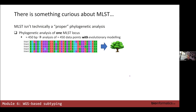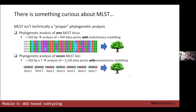In the olden days before whole genome sequence data, you might perform phylogenetic analysis by amplifying a particular gene and then performing phylogenetic analysis of that sequence data, using an evolutionary model of sequence evolution. MLST involves seven genes, and you could concatenate the sequence data of those seven genes and analyze it using a proper phylogenetic framework — and certainly people have done this.